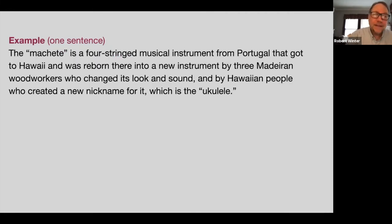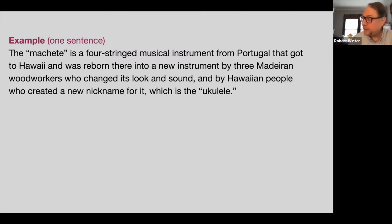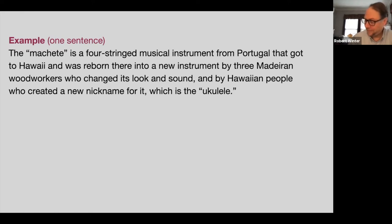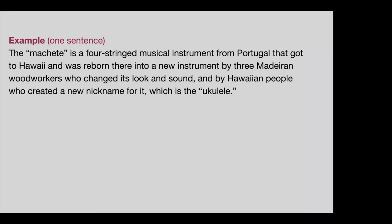I'm going to read it to you and see how well you can understand it. 'The machete is a four-stringed musical instrument from Portugal that got to Hawaii and was reborn there into a new instrument by three Madeiran woodworkers who changed its look and sound, and by Hawaiian people who created a new nickname for it, which is the ukulele.' How did you do with that? Was it easy to follow and understand? It was hard to understand — in the beginning it was okay, but as we proceeded it got complicated.